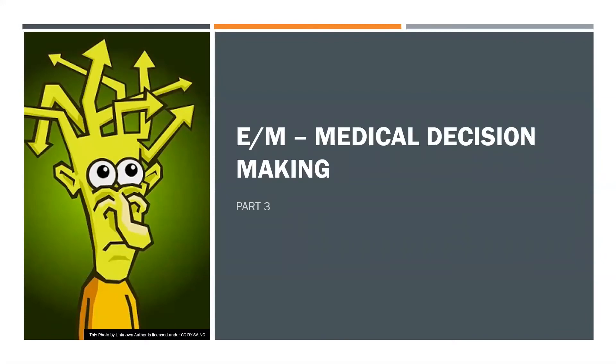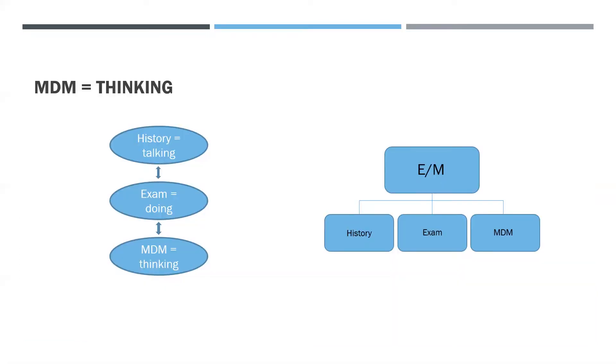If you haven't watched Part 1 E&M Coding History and Part 2 E&M Coding Examination, please do so before watching this video. As you know, E&M codes contain three key components: the history, examination, and medical decision-making. Today we're covering the medical decision-making component — welcome to Part 3: E&M Coding Medical Decision-Making. If you haven't watched parts 1 and 2, please do so, otherwise you'll be completely confused with this MDM component.